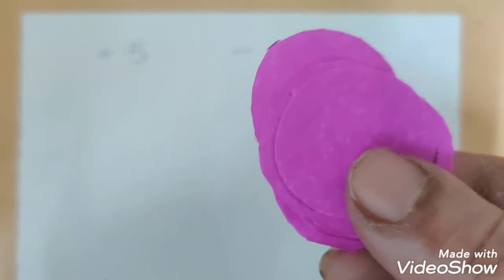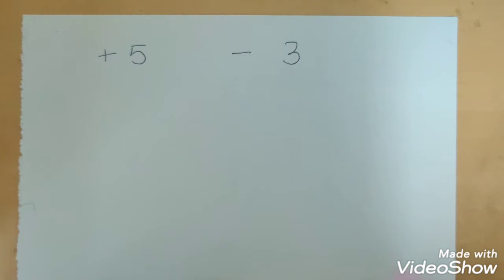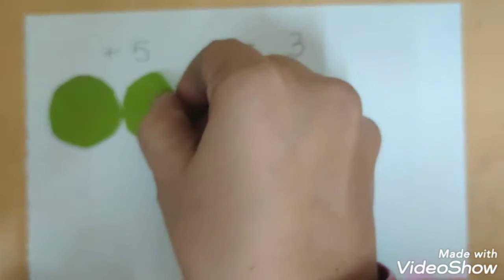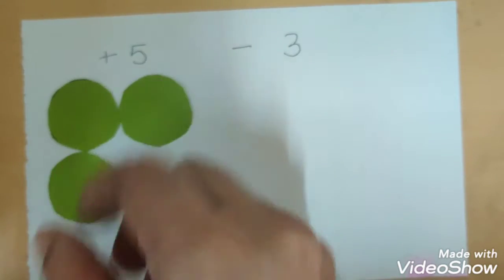All that we need to do is for the number plus, let us associate the green colors. So, when I have a plus 5, I need to have 5 of these circles which are green in color. Let me put it here.